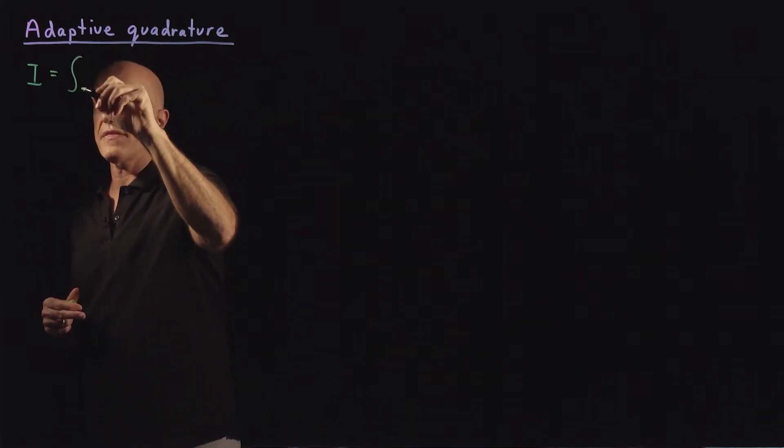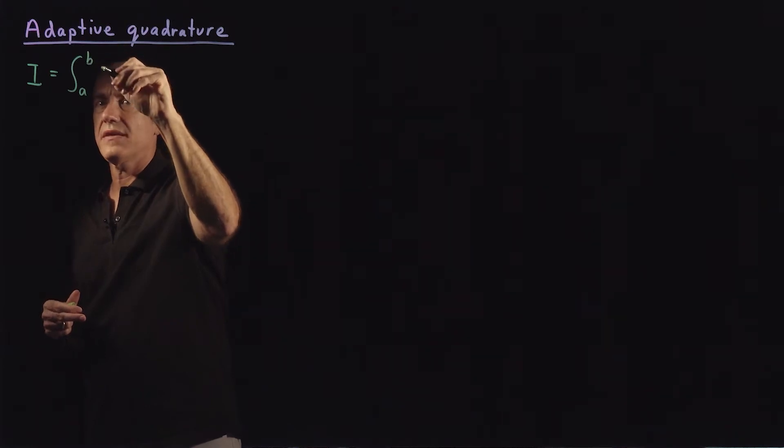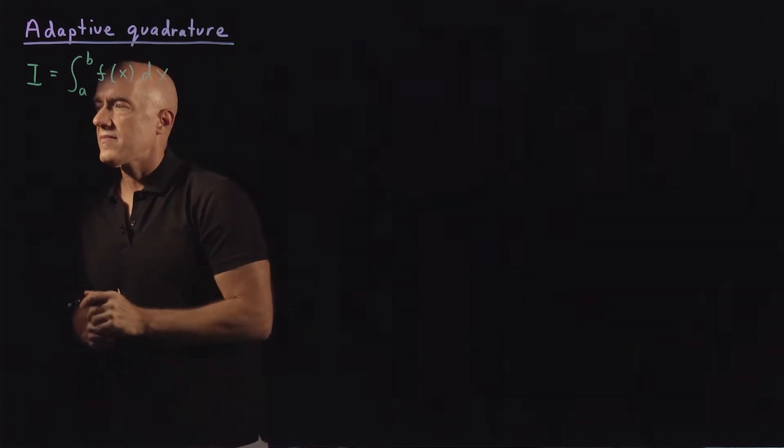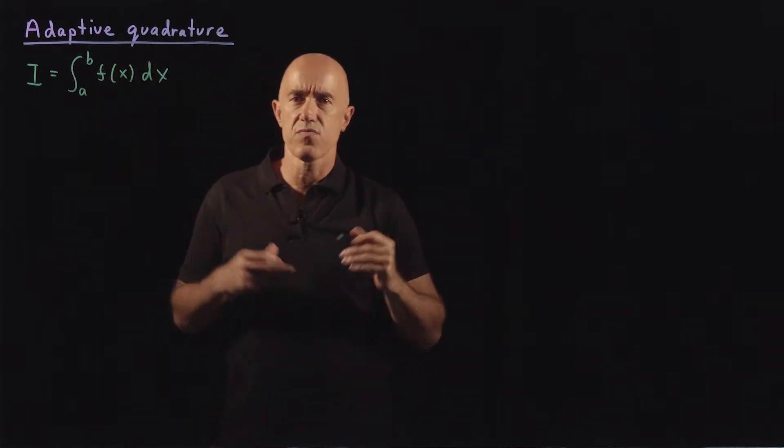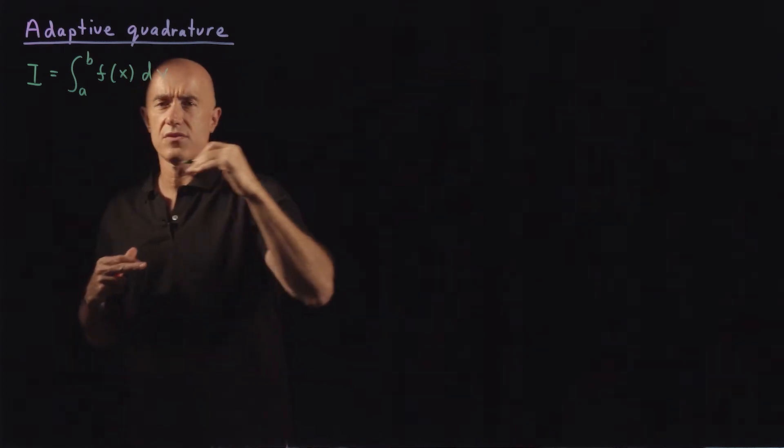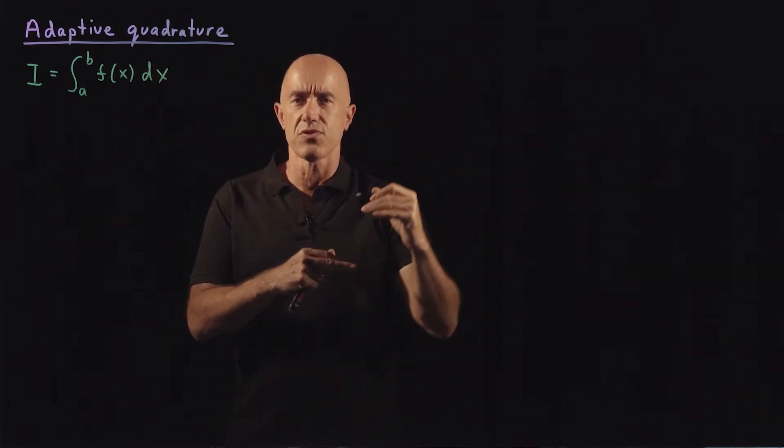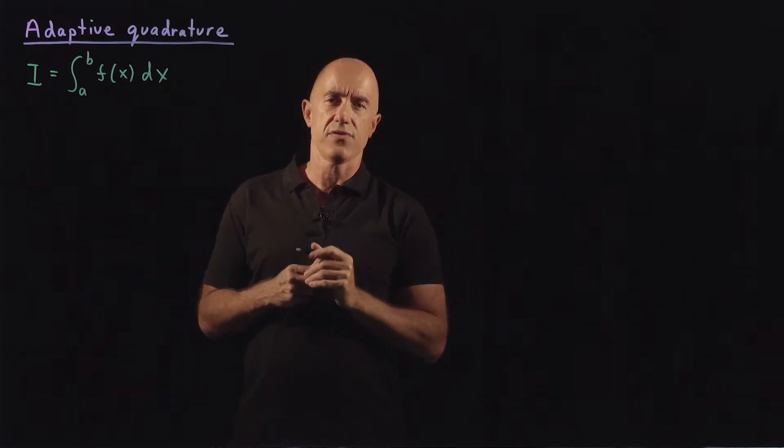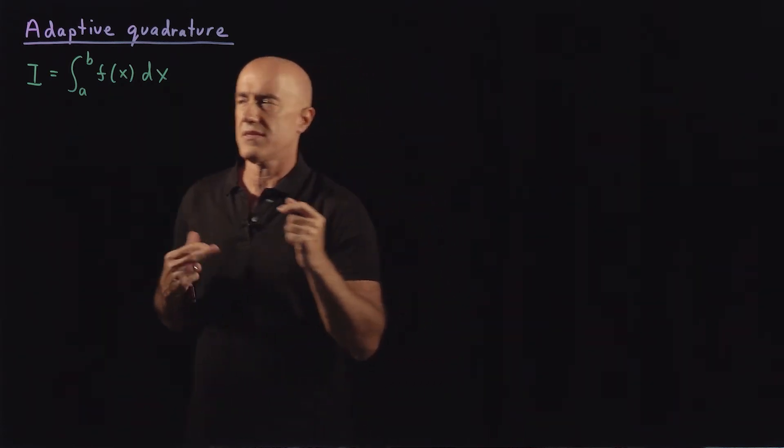I want to integrate the function from a to b of f of x dx. How does it work? Well, you start at level one, go to level two, to level three, until you get the desired accuracy. So what is level one?